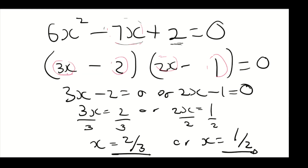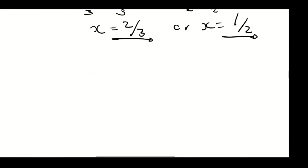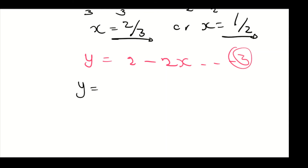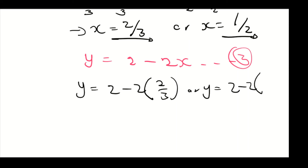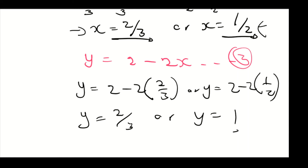These are your solutions of x. Using equation 3, y equals 2 minus 2x, we substitute x equals 2 over 3 to get y equals 2 over 3. Substituting x equals 1 over 2 gives y equals 1. So these are our solutions of y, paired with our solutions of x.